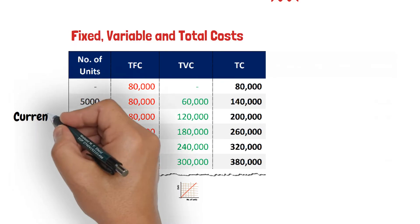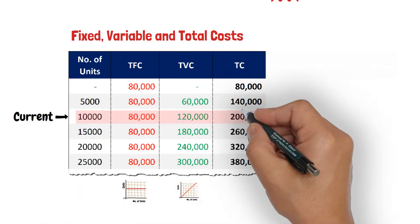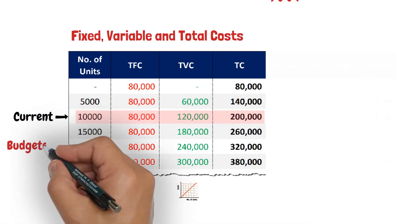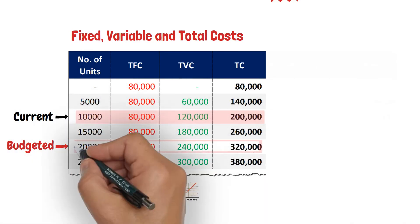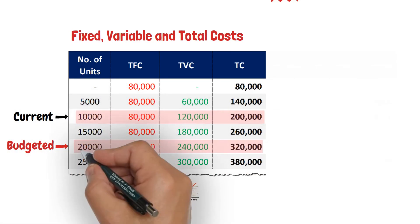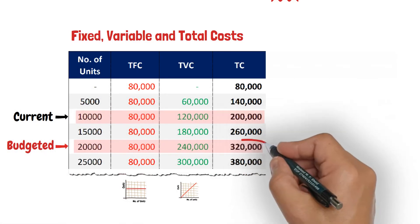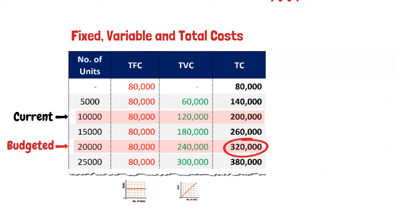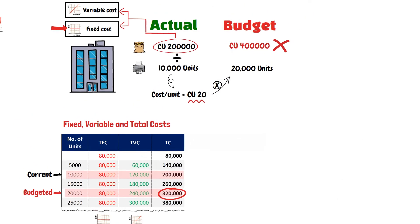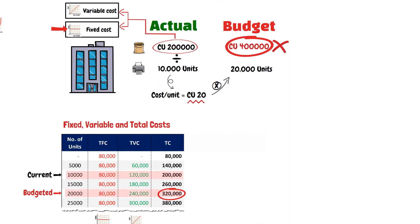This is the current level of production, and that is the target level of production with a total manufacturing cost of 320,000 currency units, and not the overstated cost of 400,000 as calculated at the beginning of the video.